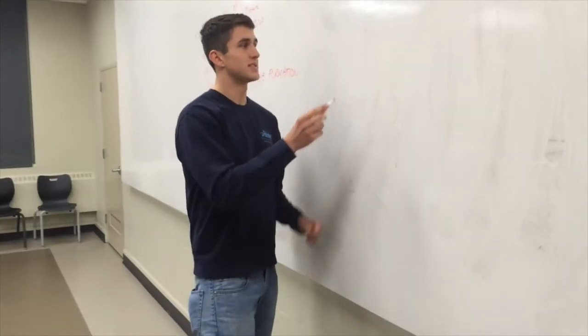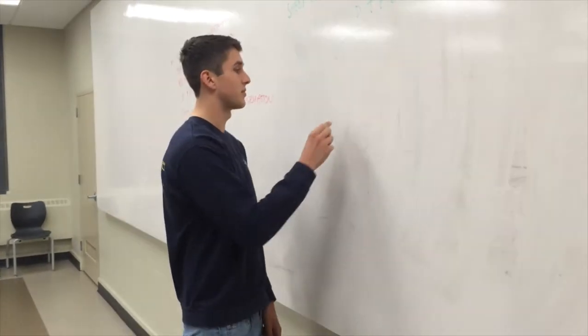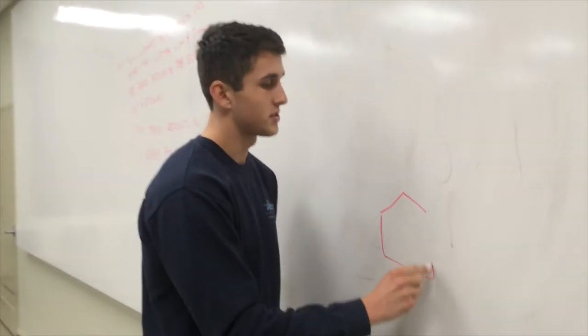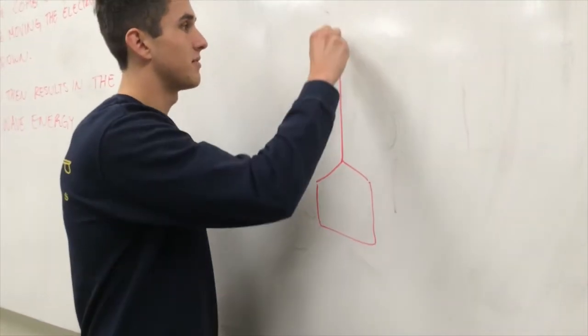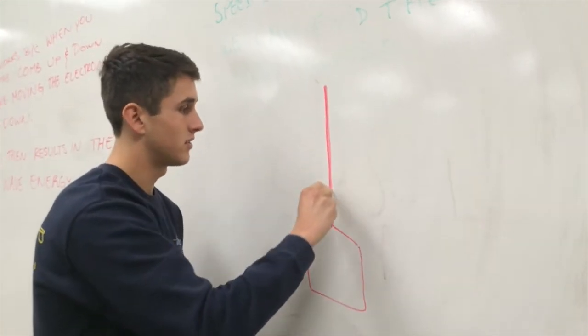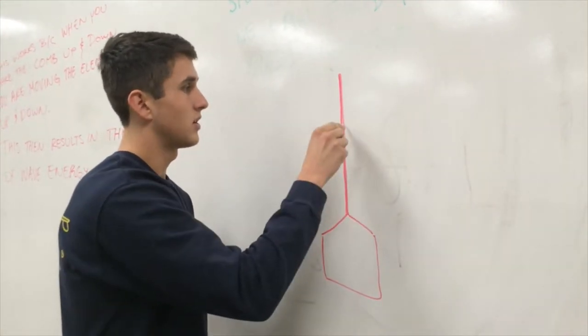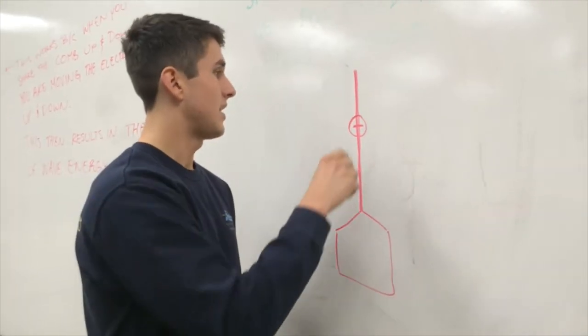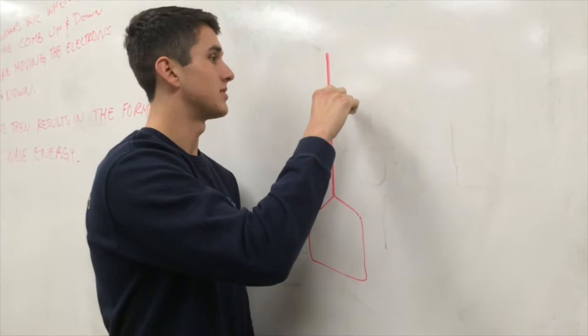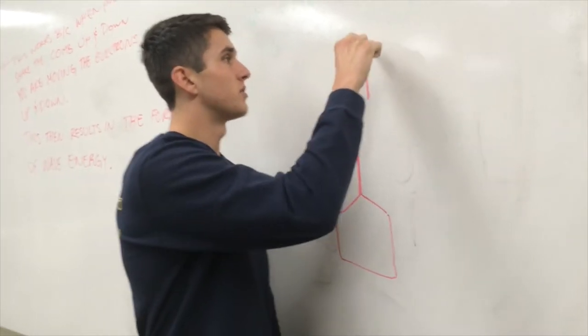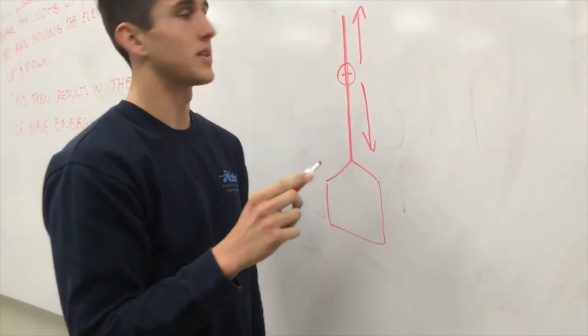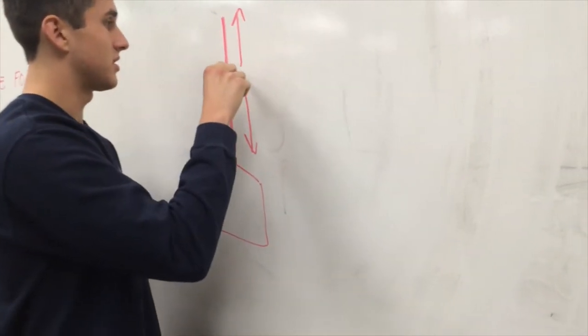This is the same concept as a radio tower. When you have the radio station and you have the antenna, you have an electron in the antenna, and what they do is they're going to move the electron up and down. This causes the electrons to go out and down.